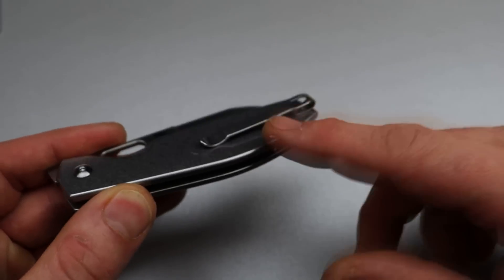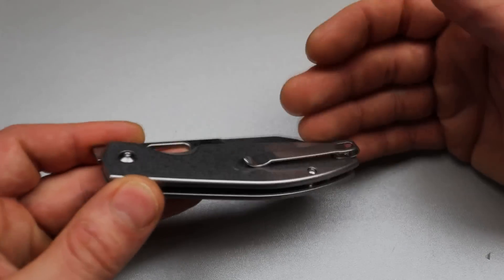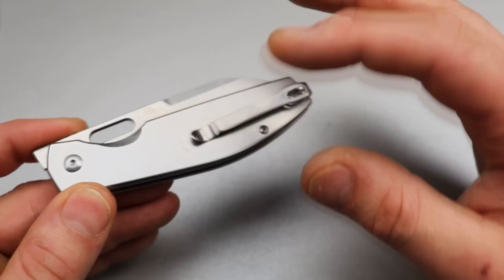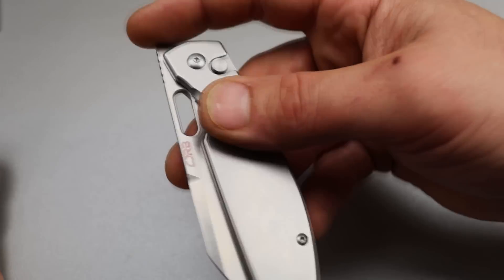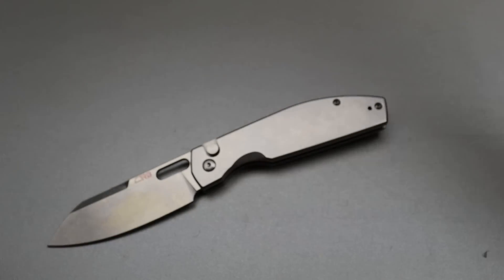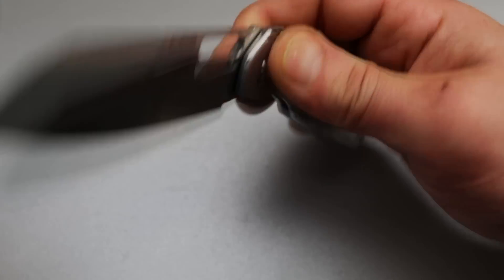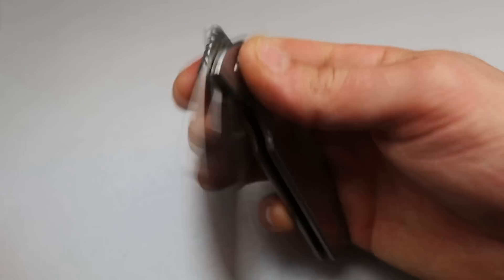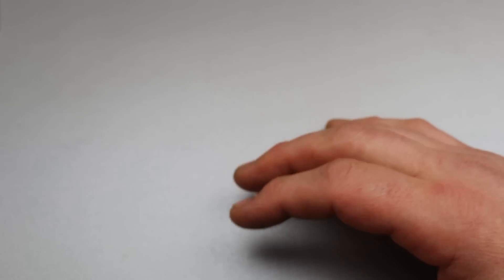When you use clips like these, it kind of spoils you compared to other clips because they're so gentle on your pockets. And that's why I think this is a great work knife too, because you can take this in and out of the pocket without ever fearing about your pocket. So anyways, yeah, the CJRB Echo is probably my favorite CJRB at the moment.